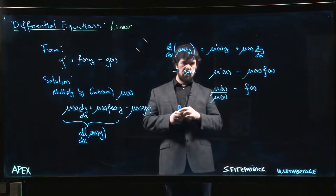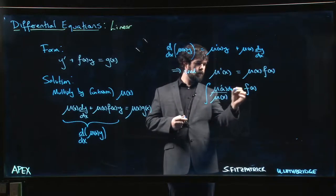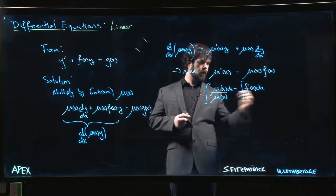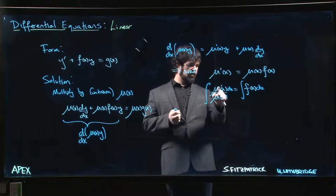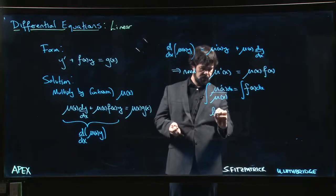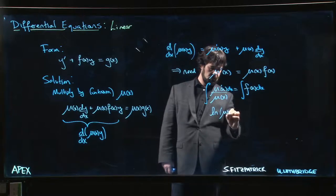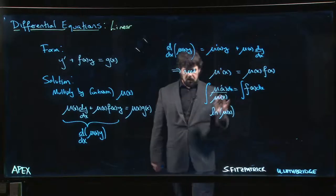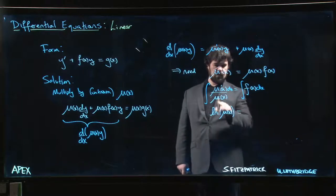And now we integrate both sides. And the great thing about this side is this is exactly a natural log derivative. This is going to give us the natural log of mu of x. We're not going to worry about absolute values here. That's just the natural log of mu.